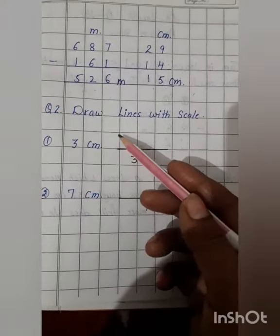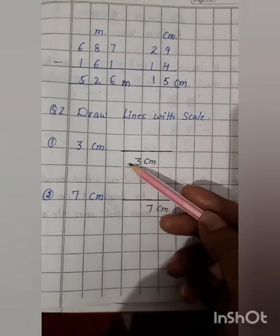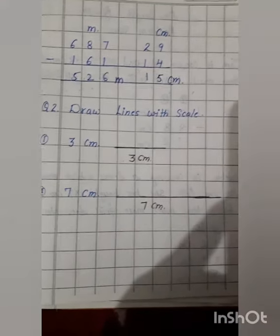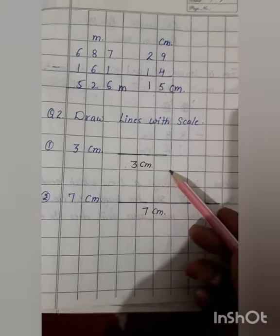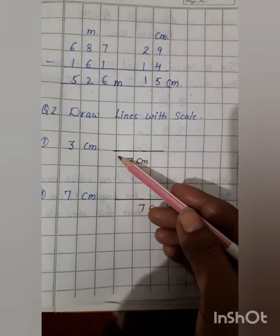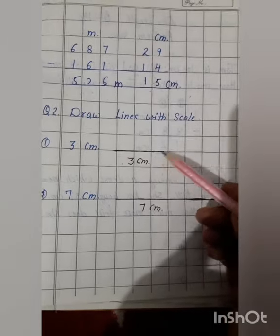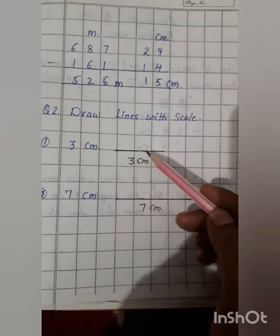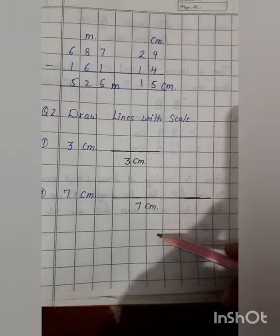Next question, draw lines with scale. 3 centimeter. Use a scale to draw these lines. Start from 0 and mark till 3 centimeter. Then, join the line. Next is same.